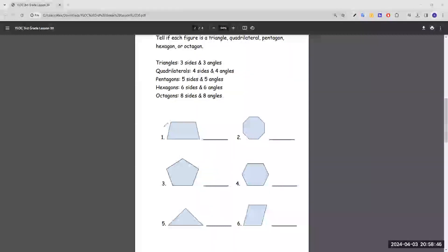So number one, it has one, two, three, four sides, and we're just going to circle all the angles. So there's an angle here, here, here, and here.